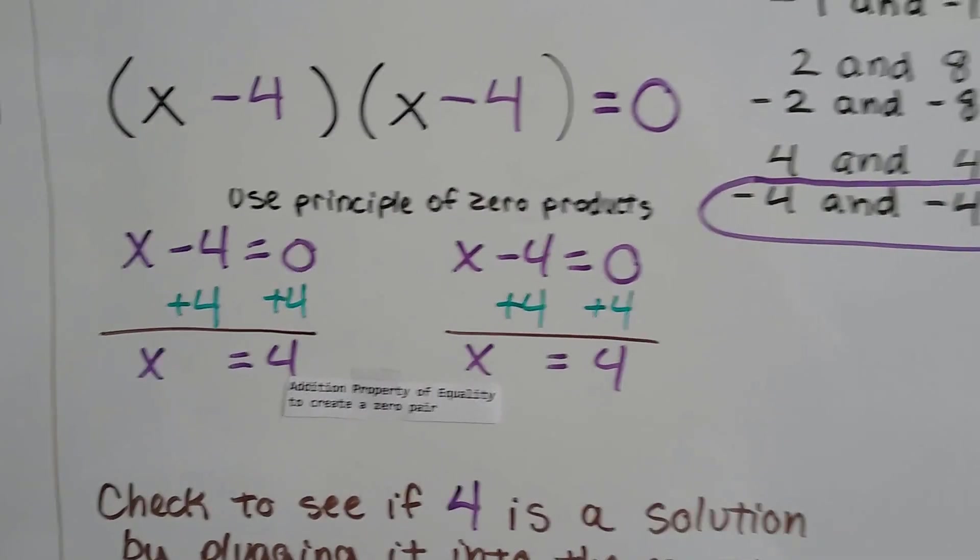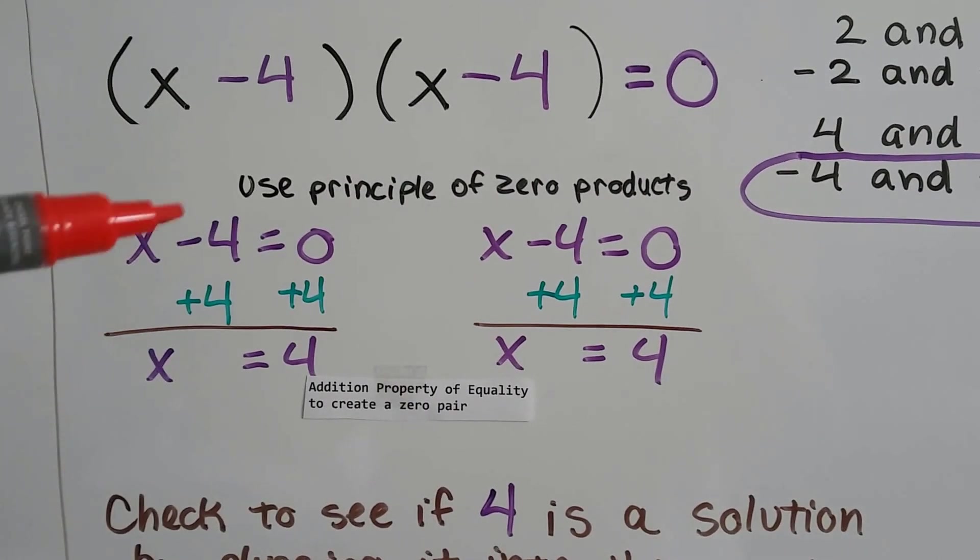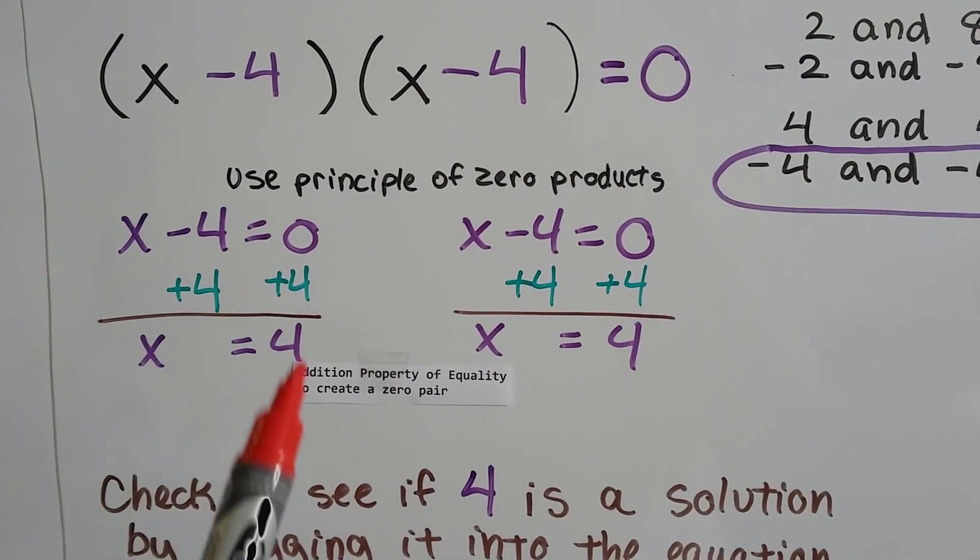Using the addition property of equality, we create a zero pair and isolate the x to one side by adding 4 to each side of the equal sign. We get x equals 4.